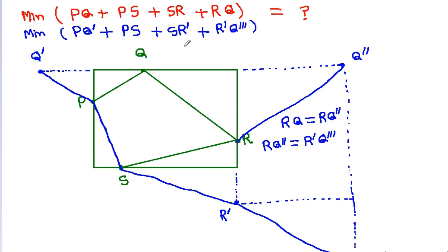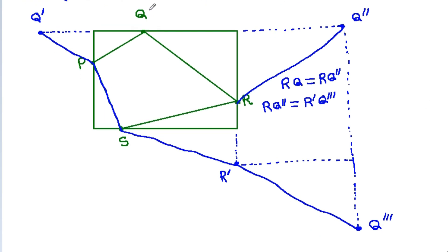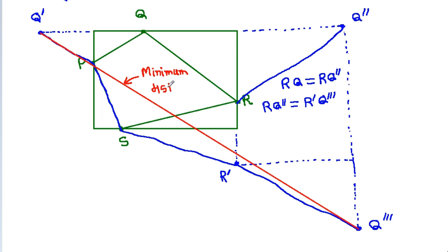And we have to find the minimum value of this. If we join Q dash and Q double dash, we know that a straight line is the minimum distance between any two points. So it will be the minimum distance between Q dash and Q double dash. That means Q may be anywhere on this line, but P must be here, and S must be here, and R dash must be here for minimum distance.